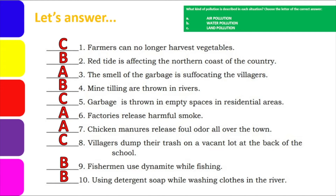Number 6 — factories release harmful smoke. Smoke involves air, so that's air pollution, Letter A. Number 7 — chicken manure releases foul odor all over the town. Odor again, so Letter A, air pollution. Number 8 — villagers dump their trash on a vacant lot at the back of the school. Letter C, land pollution. Number 9 — fishermen use dynamite while fishing. Since fishermen catch fish in water, that's water pollution, Letter B. And number 10 — using detergent soap while washing clothes in the river. That's Letter B, water pollution, because our river is being polluted.